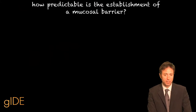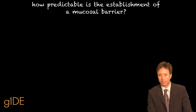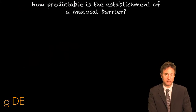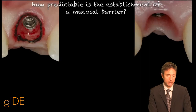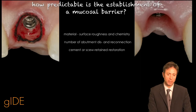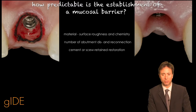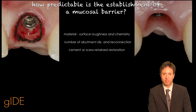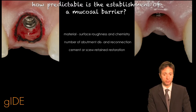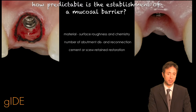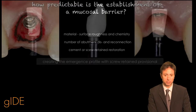We are going to speak about the predictability of the establishment of the mucosal barrier when using the one-abutment one-time concept. We are having different situations: different soft tissue adherence between abutments, different materials, and different types of connections.